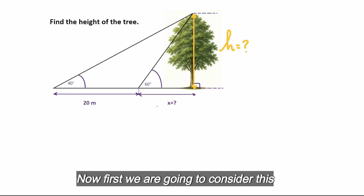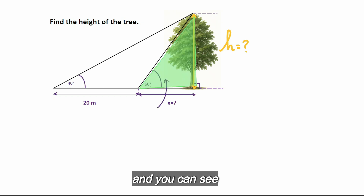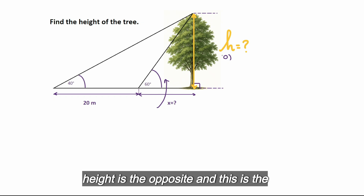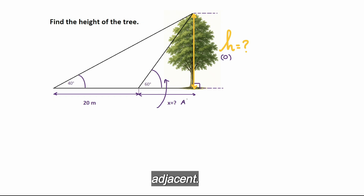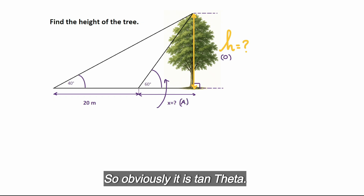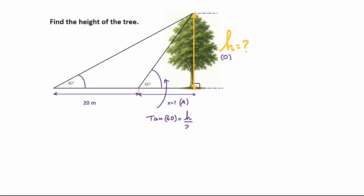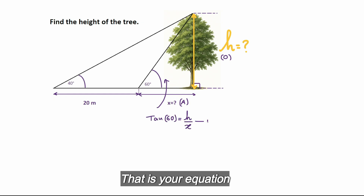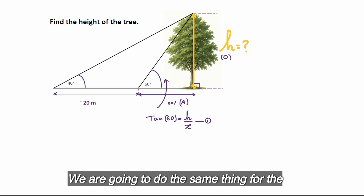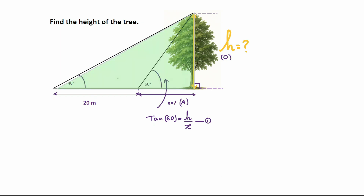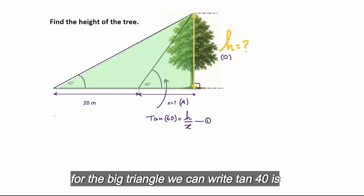First, we are going to consider this triangle here. You can see the height is the opposite and this is the adjacent, so obviously it's tan theta. So we can write tan 60 is equal to h over x. That's your equation one.